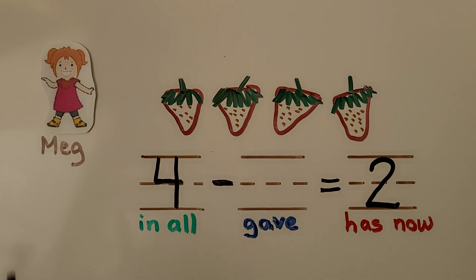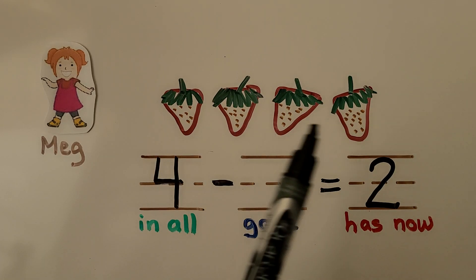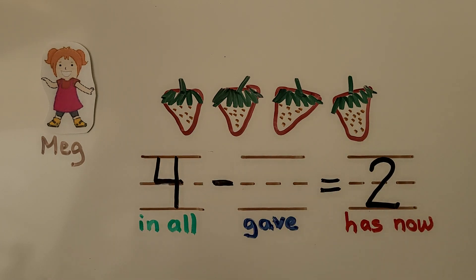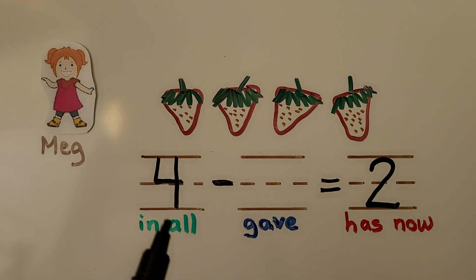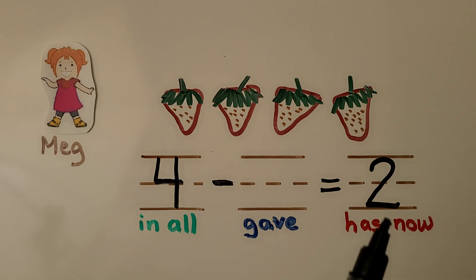Here's Meg. Meg has a set of four strawberries. She gives some to her sister. Now she has two strawberries. How many did she give to her sister? We know she had four in all — there were four in the set. We also know she has two now. We need to find how many she gave to her sister.